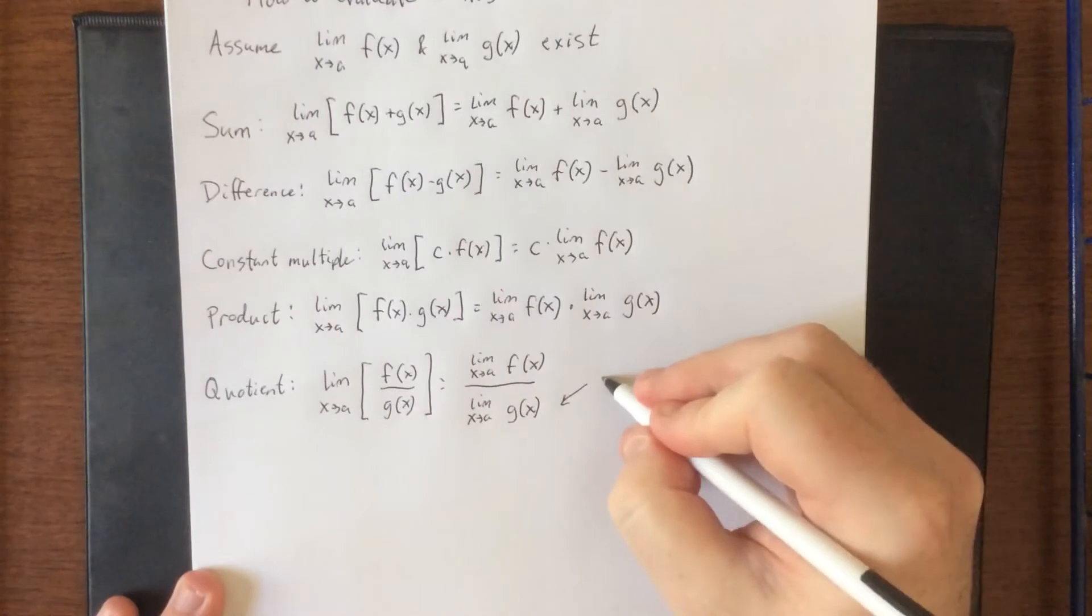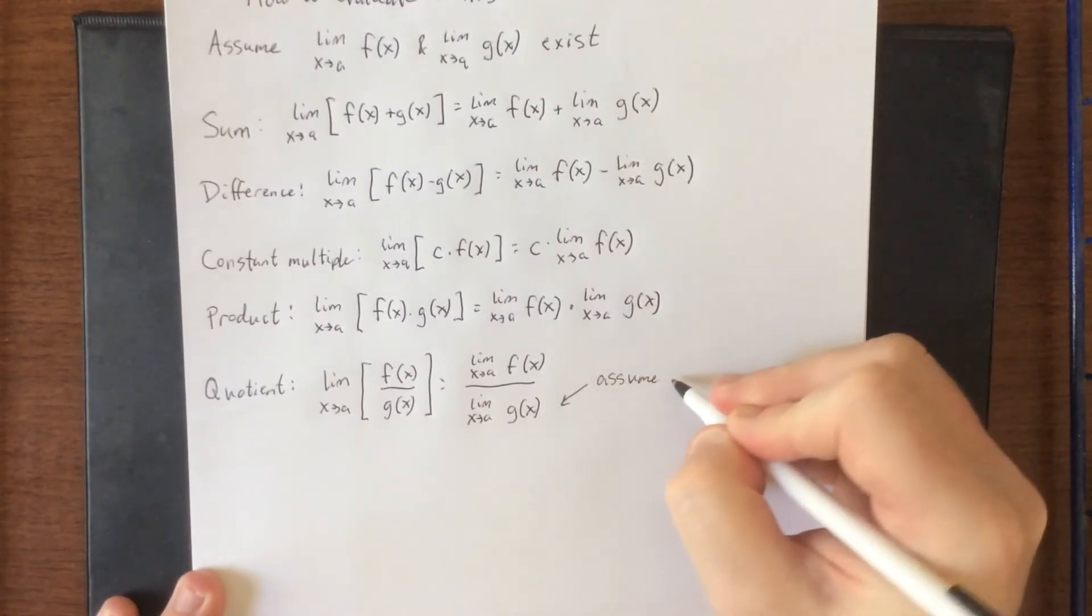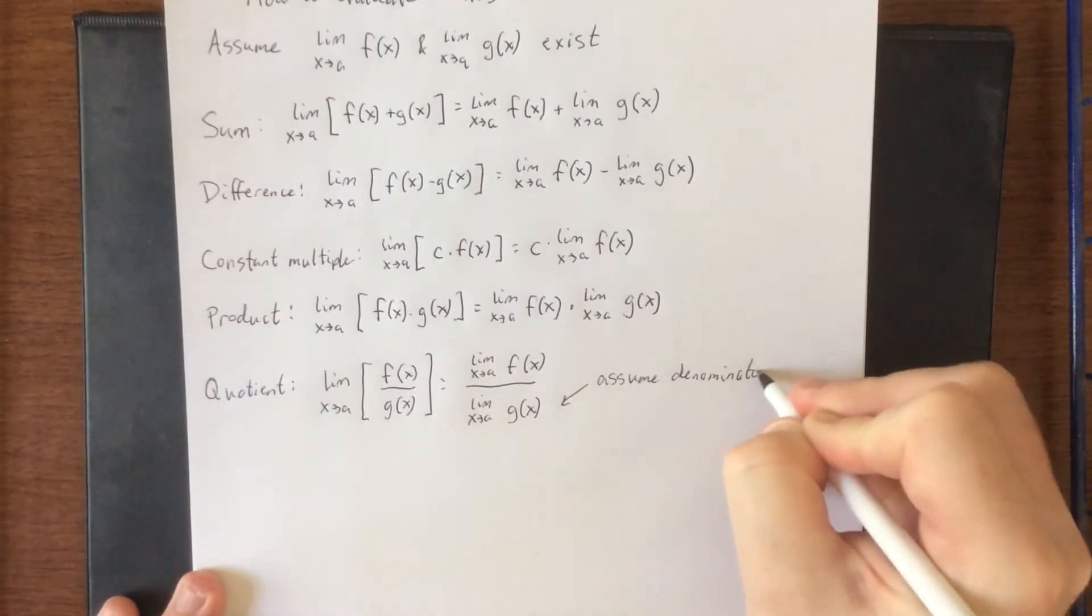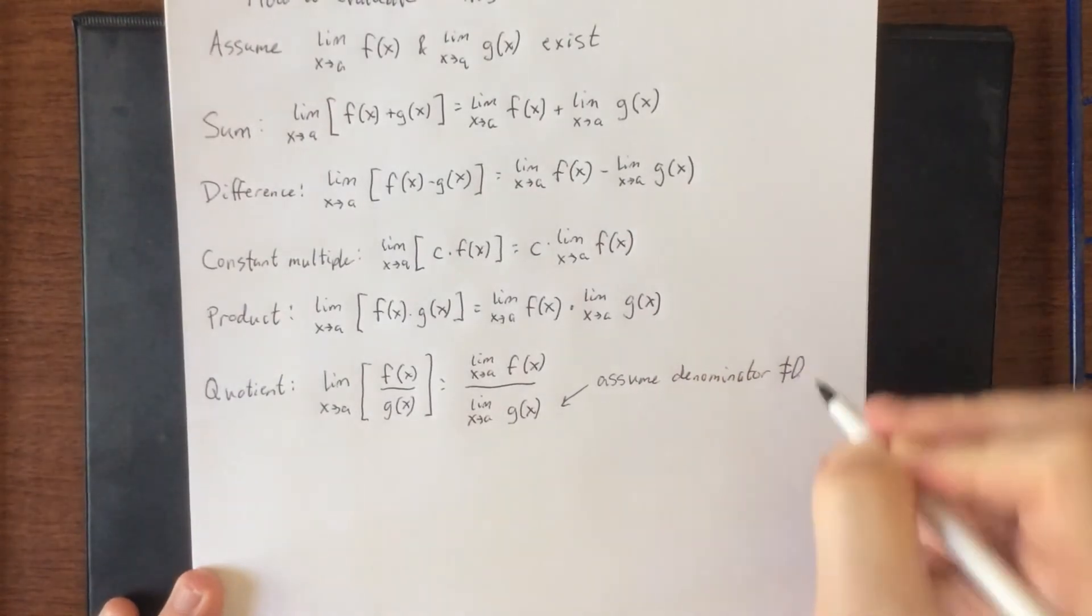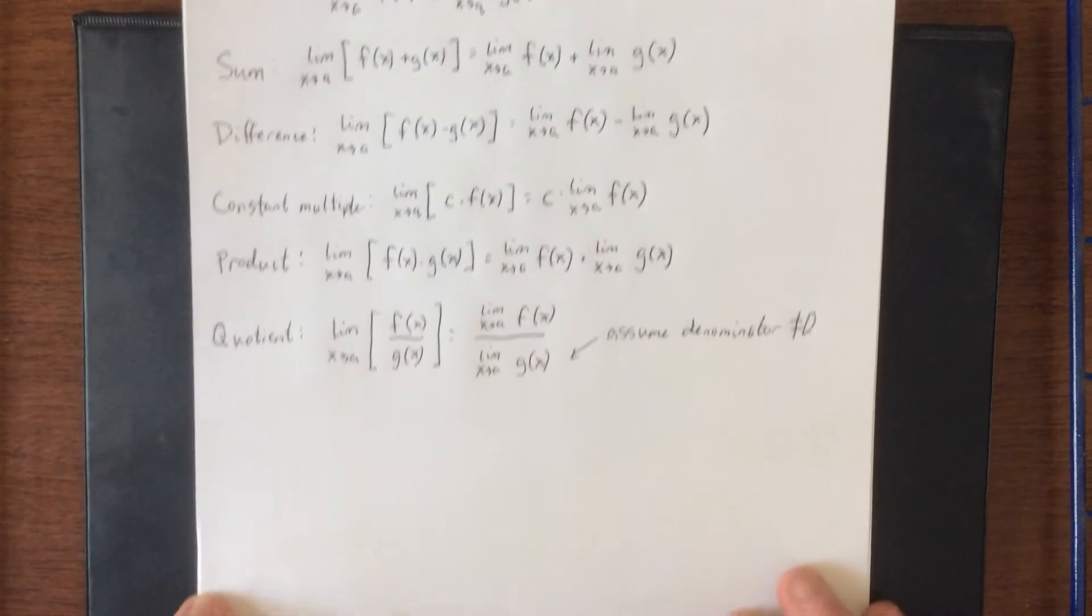Now this assumes that the denominator is not equal to zero. In the event that it is equal to zero, we have another way to get around that and we'll talk about that in a future video.